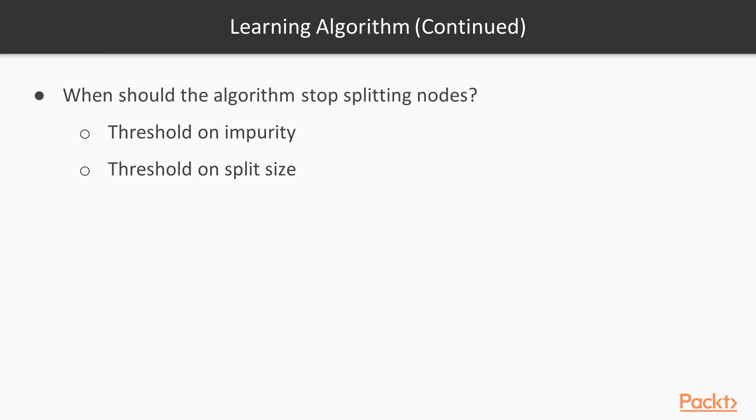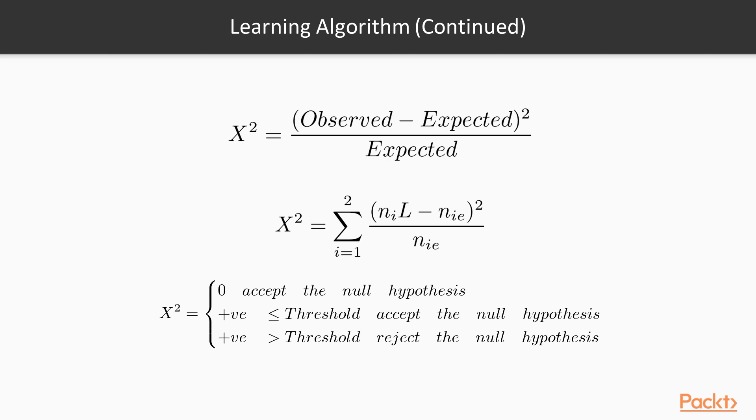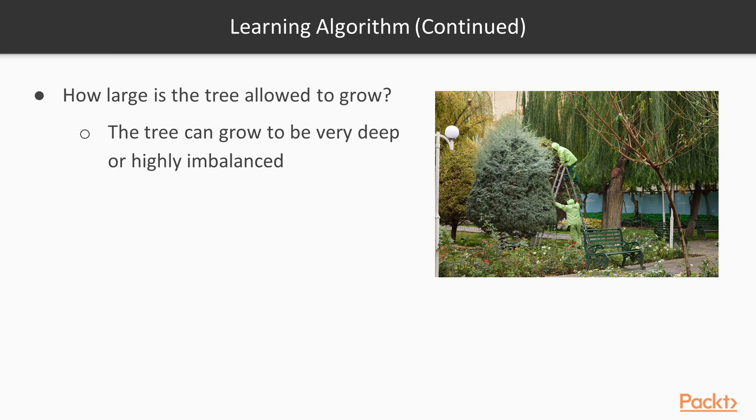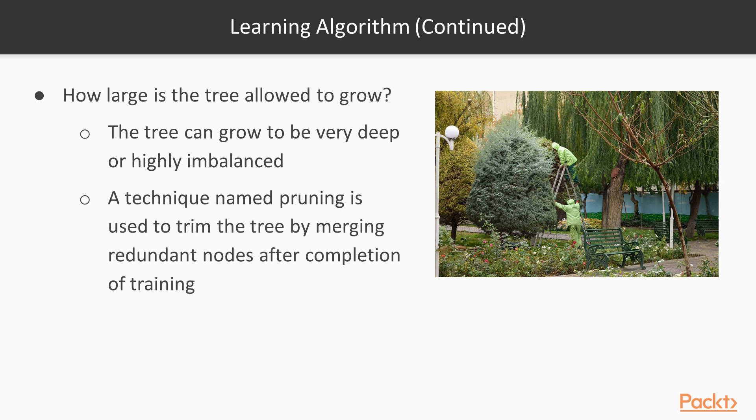Some ideas involve setting a threshold on the impurity or a threshold on the split size. It's very tiring to find such an optimal threshold. The chi-square test is based on the null hypothesis that the algorithm should stop if a given split is no better than a random split. So if the result is either zero or below a given threshold, usually named the confidence level, then the split is as bad as a coin toss or a random split. Otherwise, the null hypothesis is rejected and the algorithm continues. So the tree can still grow to be very deep or even grow to be highly imbalanced, so a technique named pruning is used to trim the tree.